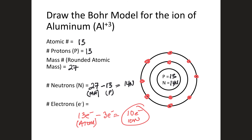We've given examples of ions and atoms: cations (positive ions) like Al³⁺, anions (negative ions) like N³⁻ and Cl⁻, and neutral atoms like nitrogen and phosphorus. You should now have a good understanding of how to draw a simple Bohr model using your periodic table.